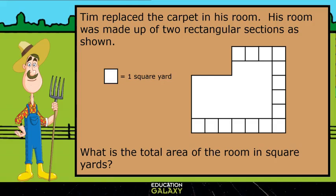Each of these squares are one square yard. I can break up this room into two rectangles right here. Let's calculate the small rectangle first. Doing base times height, we get 4 times 2. That gives us 8.